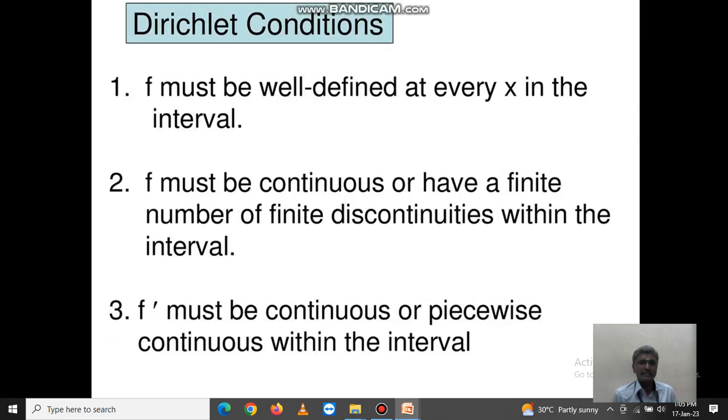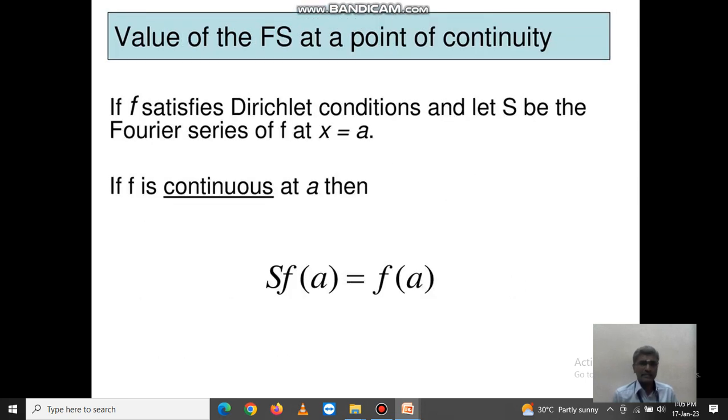What are the Dirichlet conditions? One: f must be well-defined at every x in the interval. Two: f must be continuous or have a finite number of finite discontinuities within the interval. Three: f' must be continuous or piecewise continuous within the interval. These three are called Dirichlet conditions.